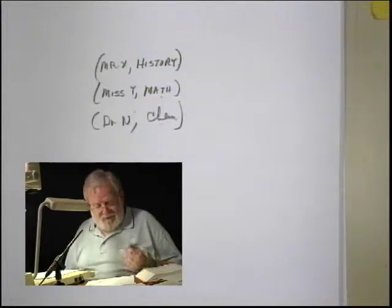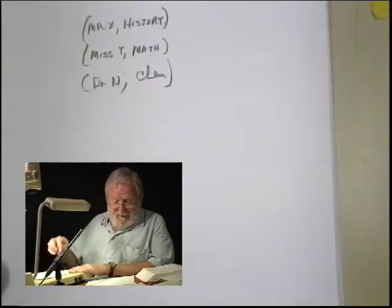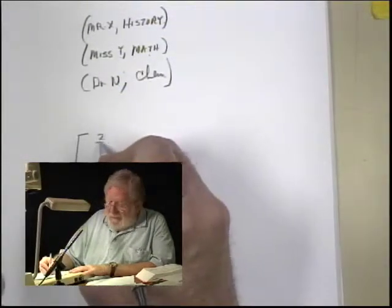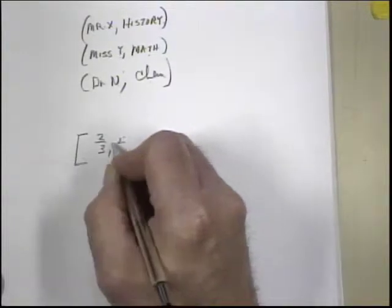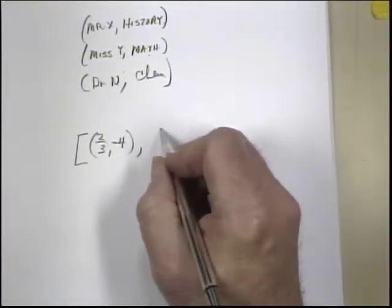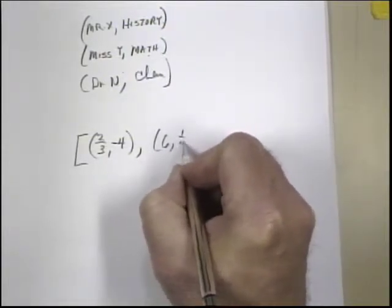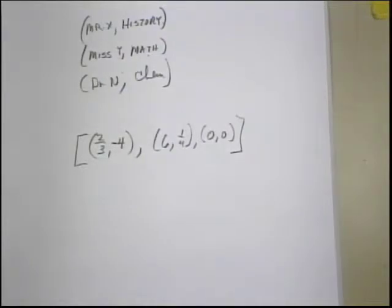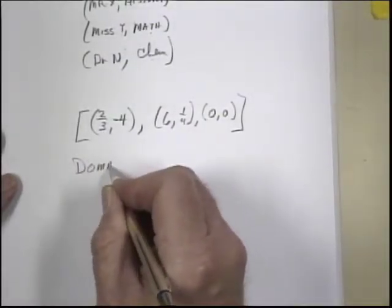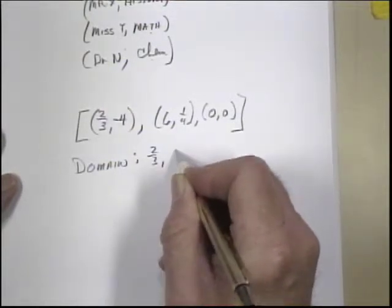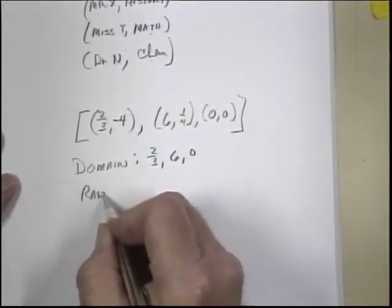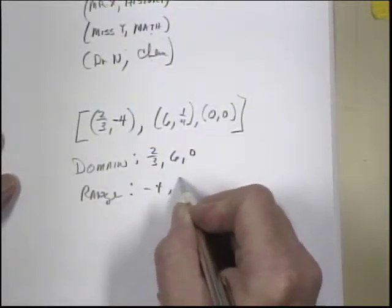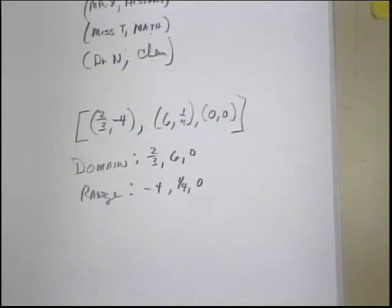But we're in a math course, so we'll order our ordered pairs as numbers. If we have the set of ordered pairs: 2-thirds and minus 4, 6 and 1-fourth, and 0 and 0 — and we were to find the domain and range — the domain would be 2-thirds, 6, and 0, and the range would be minus 4, 1-fourth, and 0. The x values are the domain; the y values are the range.